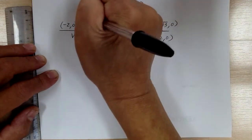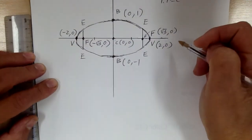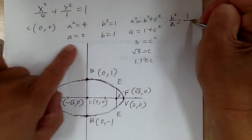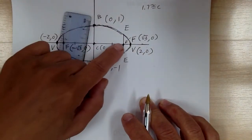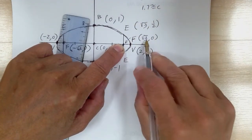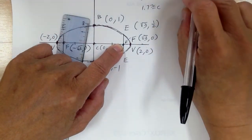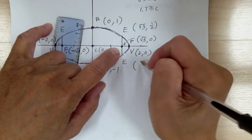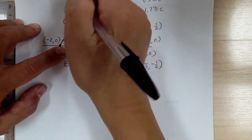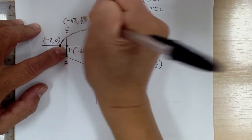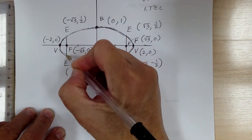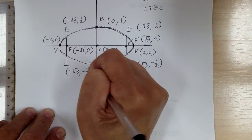To find the E points, b squared over a equals 1/2. Starting from (√3, 0): going up is the y-direction, so y changes, x stays the same — giving (√3, 1/2) and (√3, -1/2). Starting from (-√3, 0): going up gives (-√3, 1/2), going down gives (-√3, -1/2). That's all the points.